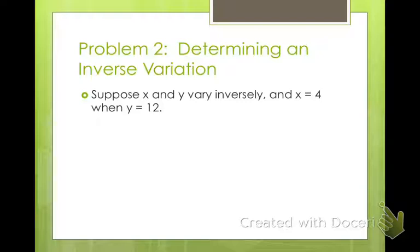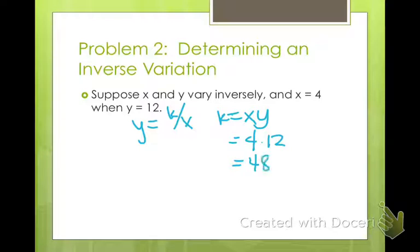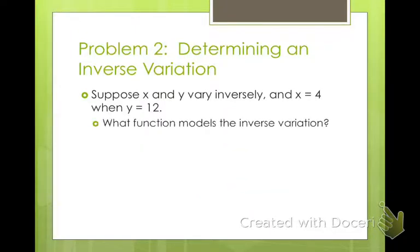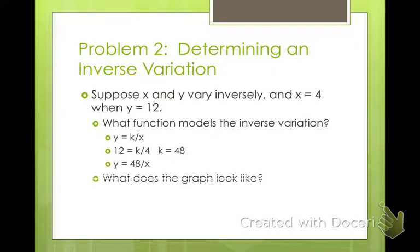So determining an inverse variation. Suppose x and y vary inversely, and x equals 4 when y equals 12. So if we know they vary inversely, then we know that y equals k divided by x, or k equals x times y. So to find that constant, we just take 4 times 12, and 4 times 12 is 48. So our inverse variation is y equals 48 over x. So there's our function. So what does our graph look like? Go ahead and put that into your graphing calculator, and then change your window so you can see what an inverse variation looks like. And then to find what y is when x equals 10, you just plug in 10. 48 divided by 10 is 4.8. So your y value that corresponds with 10 is 4.8.